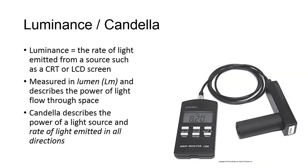Luminance refers to the rate of light emitted from a source, such as a CRT or LCD screen. The unit of luminous flux — the intensity of the light as perceived by the human eye — is the lumen, abbreviated LM. The lumen describes the power of light flow through space. The candela is another unit of measurement, derived originally from the amount of light radiating from a candle, and describes the power of a light source and rate of light emitted in all directions.